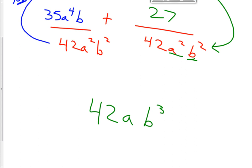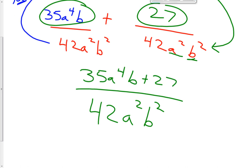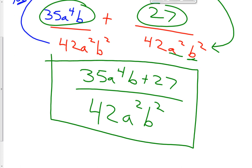Sorry about that — the common denominator is 42a²b². The numerator is 35a⁴b plus 27. So your answer is (35a⁴b + 27) over 42a²b², because you can't combine any more like terms. Let me know if you have any questions on that — it is a difficult concept, so please feel free to ask me any questions when you get to class tomorrow.